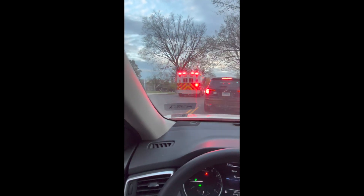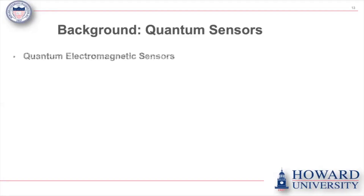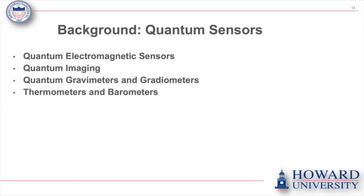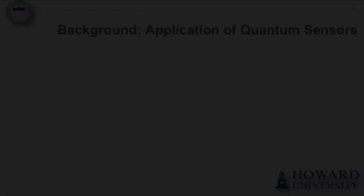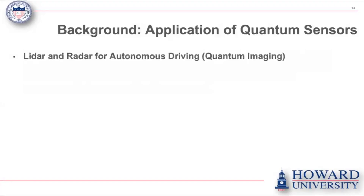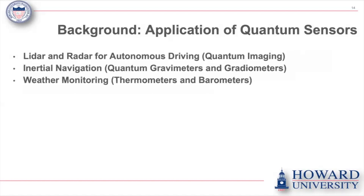Let's talk about some background on how this type of quantum sensor can be used to mitigate this problem and improve emergency response. There are different types of quantum sensors; the ones we want to focus on involve quantum sensing and transversal applications. Looking at quantum sensing, we have LiDAR and radar for autonomous driving, and that's the one we're going to focus on to build our quantum sensor.